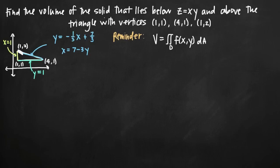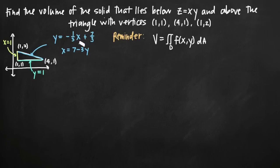This first side of the triangle shown in green is defined by the line x equals 1. This lower side shown in teal is defined by the line y equals 1. The hypotenuse shown in blue is defined by either y equals negative one-third x plus seven-thirds, or if we solve for x, x equals 7 minus 3y.